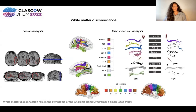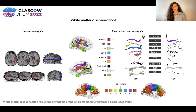So we performed a disconnection analysis via DTI. The interhemispheric comparison of the tracts revealed that in the right hemisphere there was the disconnection of the hand U-shaped tract.